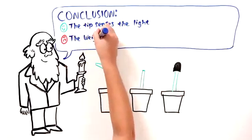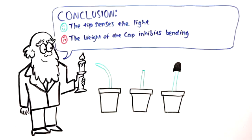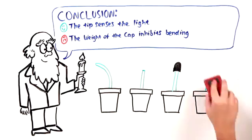Well, it could be that the tip, that it does support it. But it could also be that this cap was so heavy that it inhibits the plant from responding. So he did another control. And this time, he covered the tip of the plant with a glass cap, which allowed light signals to go through. And under these conditions, lo and behold, the plant does bend.